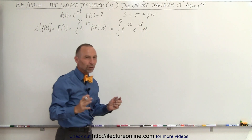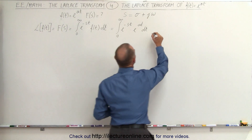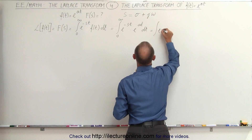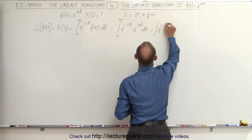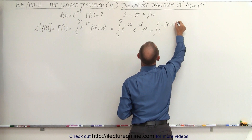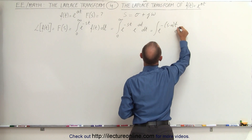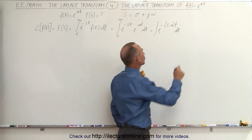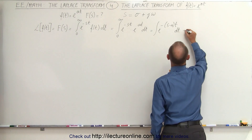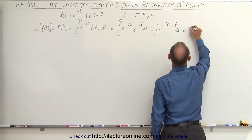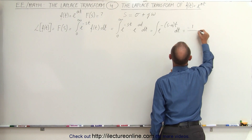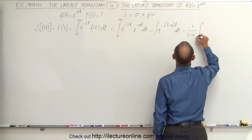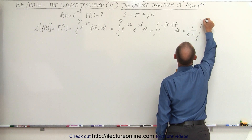In order to integrate it, we can write it in a more compact form. This can now be written as the integral of e to the minus s minus a times t dt. We want to integrate that, and we have to have the proper differential. So this is equal to minus 1 over s minus a times the integral from 0 to infinity.